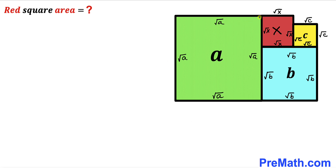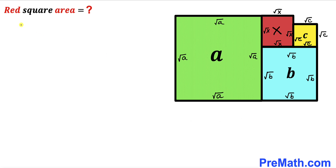Now let's make an observation. We can see that this side length √a equals the sum of two individual side lengths: √b and √x. So we can write: √a = √b + √x. We will label this as equation number one.